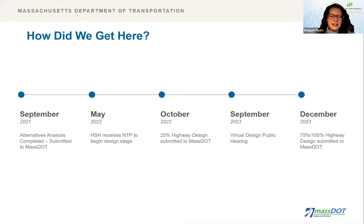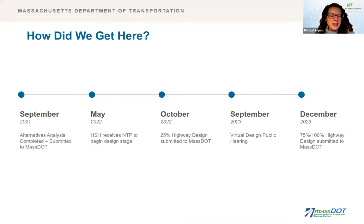After a preferred alternative was selected, HSH received the notice to proceed in May 2022 and began working on the design. In October 2022, we submitted the 25% design package to MassDOT. After review and comment resolution meetings, final approval was given to advance to our design public hearing, which was held back in September. Following that hearing, the design team and MassDOT took the feedback and looked to make revisions as we advanced to the 75–100% submittal, which was delivered to MassDOT in December.